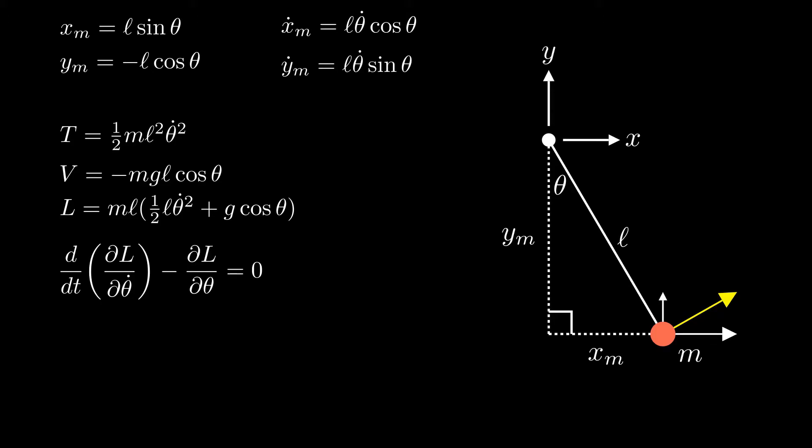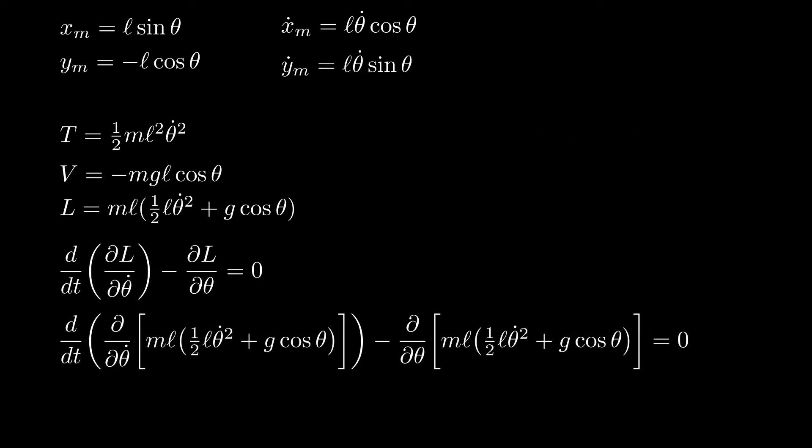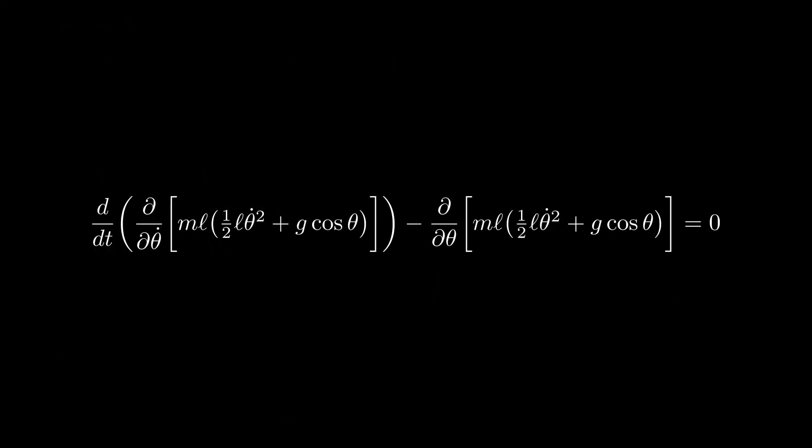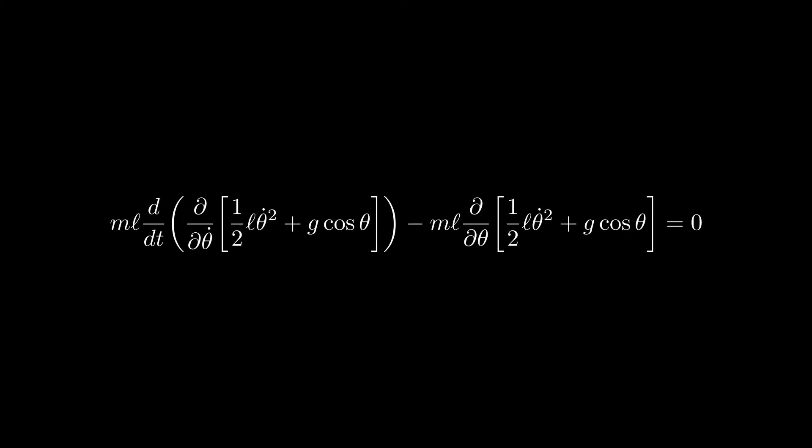Next, we'll plug L into the Euler-Lagrange equation, and then solve this to obtain our equations of motion. We'll start by factoring out this ML term, and then dividing.